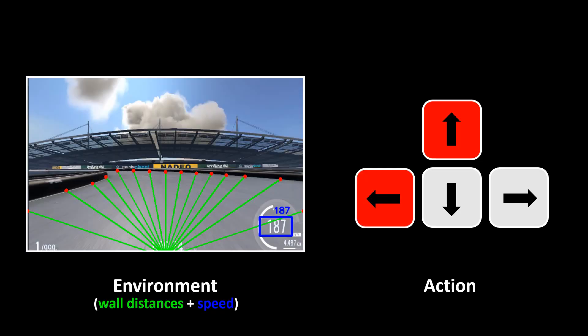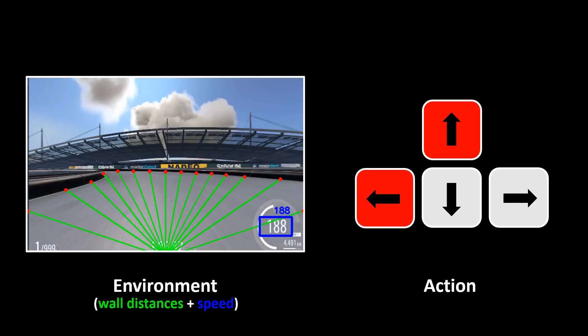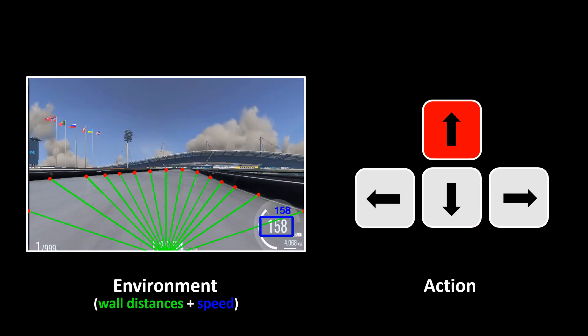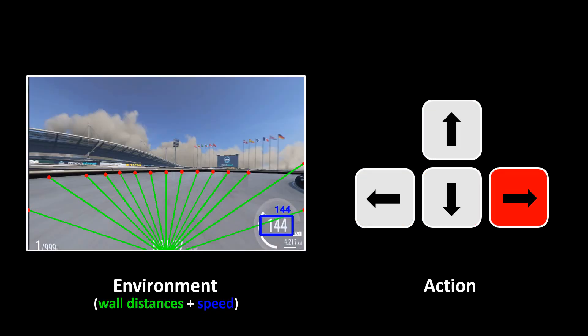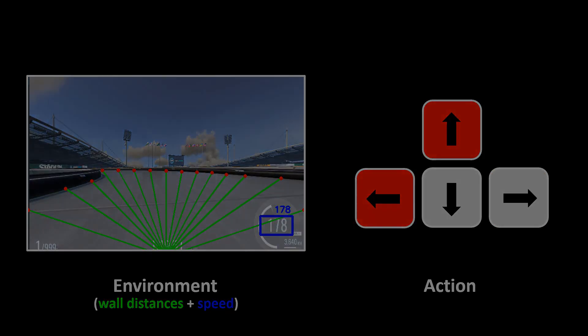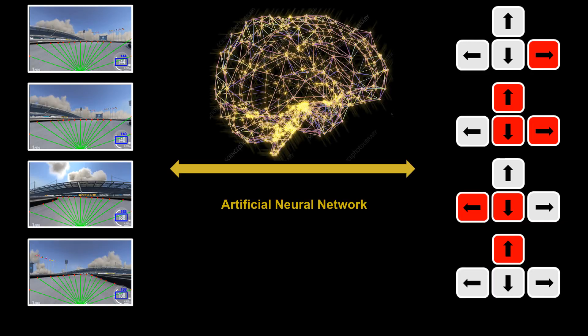Now I have many distances and speed values, and each time I also have the corresponding inputs I used while playing the game. I trained an AI algorithm to learn a relation between map environment and in-game actions. This machine learning algorithm is called an artificial neural network.